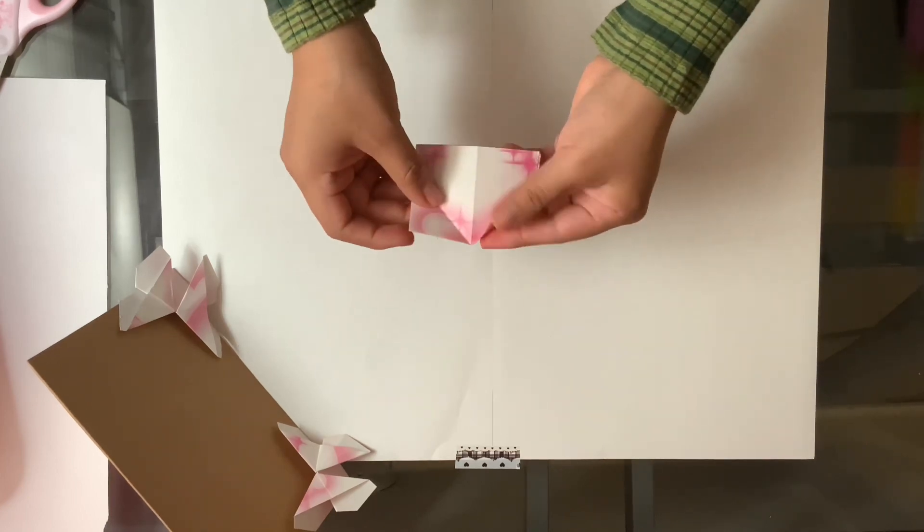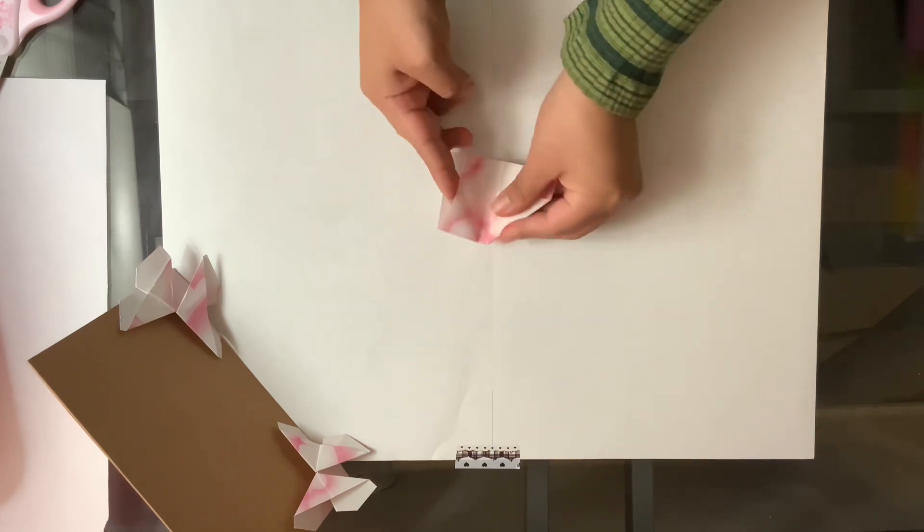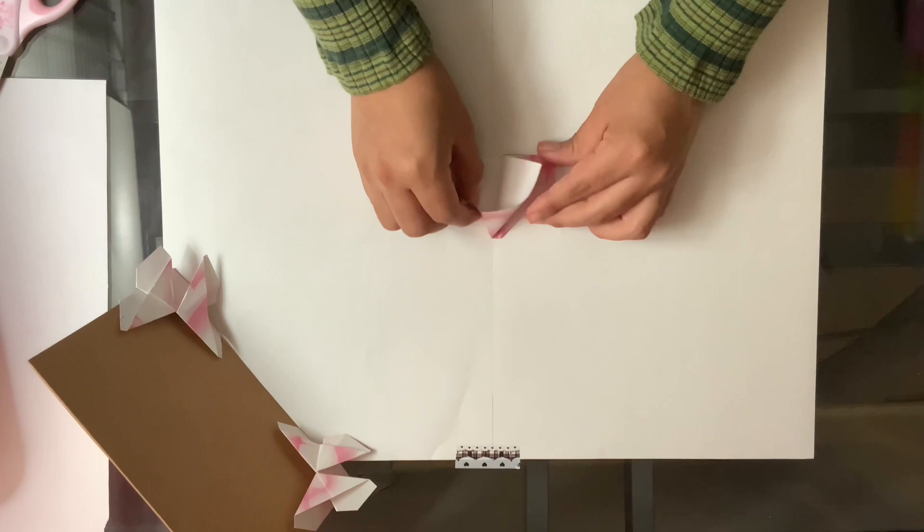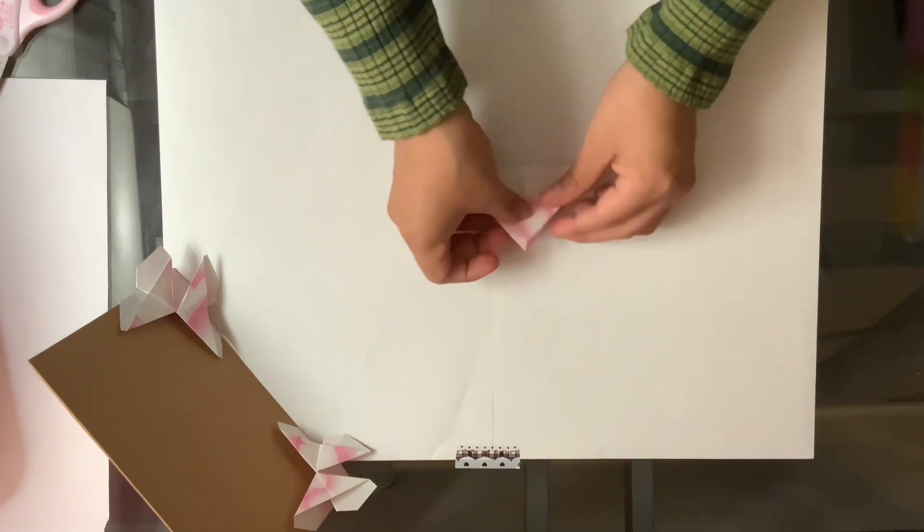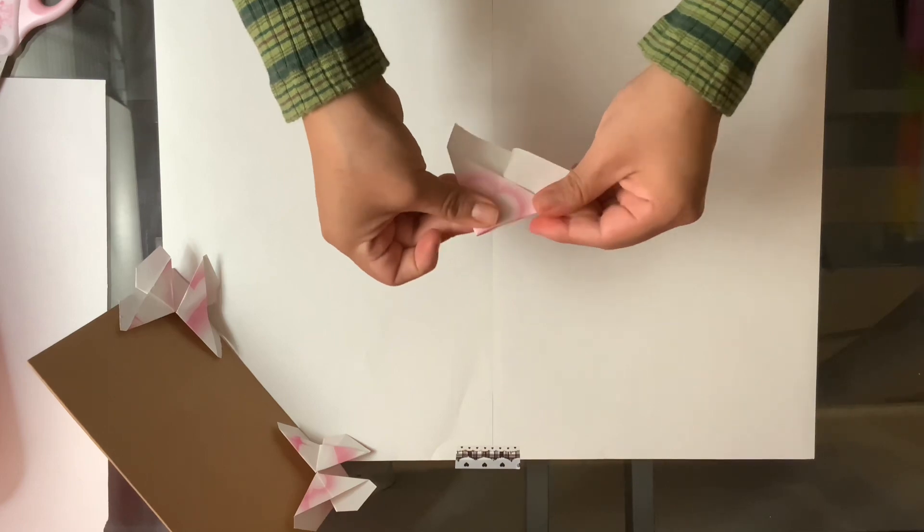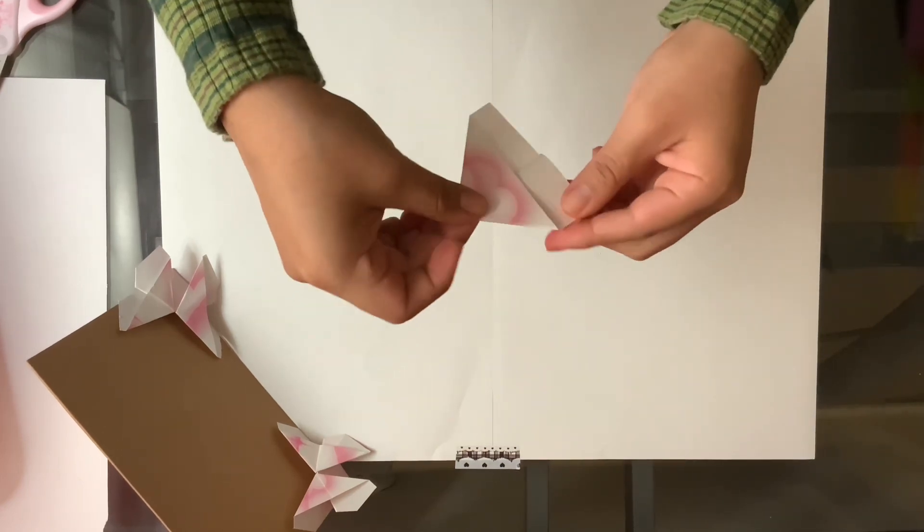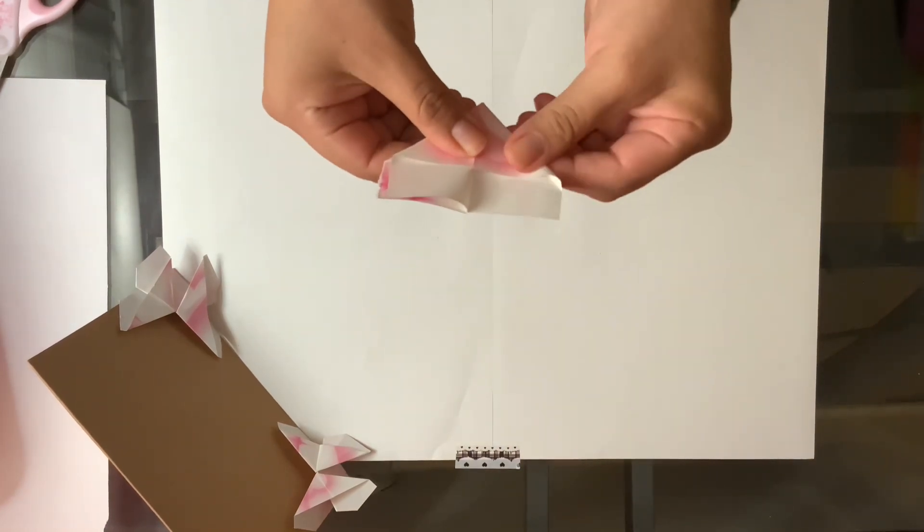You are going to unfold one of the corners and then you're going to collapse it in on itself. This step might require a bit of readjusting because you want your folds to be straight.